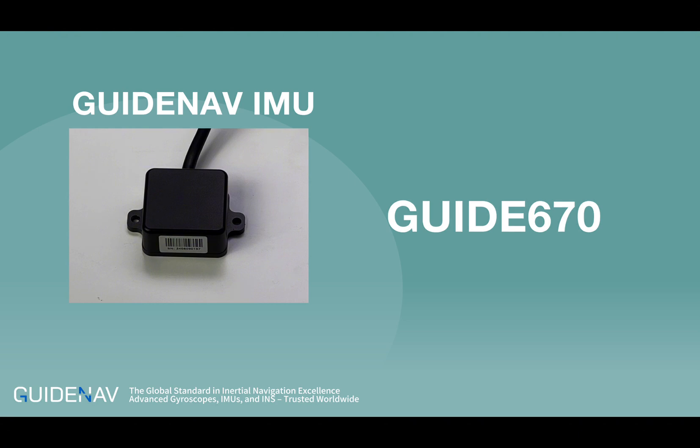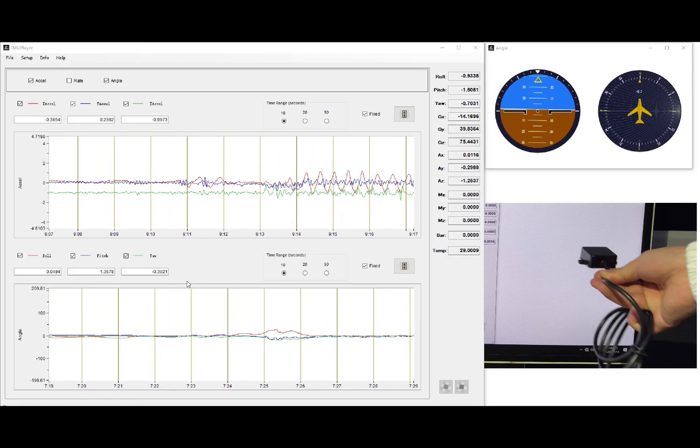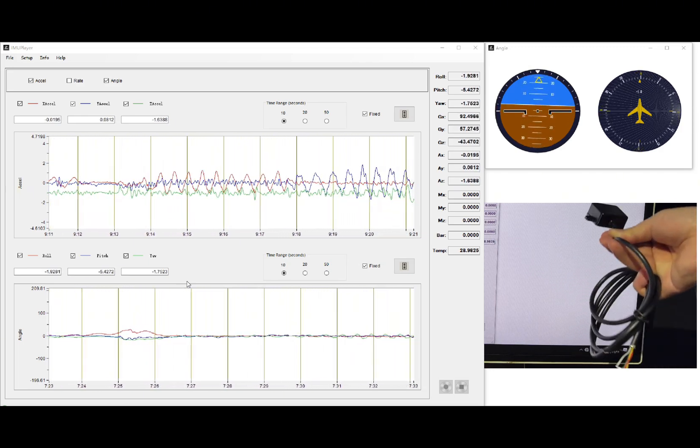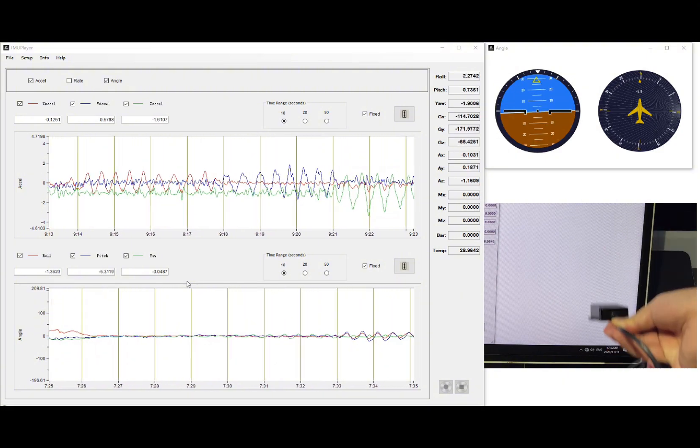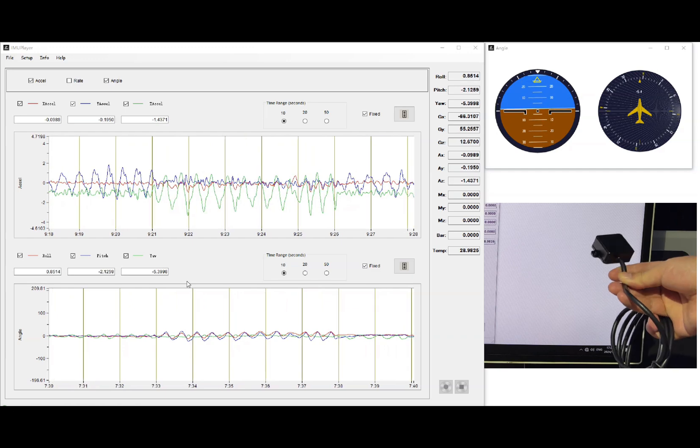Let's connect it to a computer and see how its attitude is recorded by data. You can see that the components of acceleration in the X, Y, and Z directions are changing in real time as the module moves, and the curves give a more visual representation of this change.